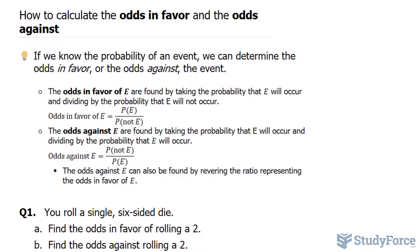In this lesson, I'll show you how to calculate the odds in favor and the odds against. A few things you'll need to know before we get started is that the odds in favor of an event, let's say E, are found by taking the probability that E will occur and dividing it by the probability that E will not occur.